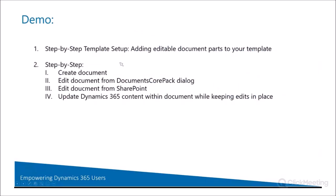What we're going to do today is show you the template setup — adding editable document parts to your template and how to go through that. And then we'll show you the process step by step: we're going to create a document using that template, edit the document from the Documents Core Pack dialog, then flip over to SharePoint and make some edits to the document there. Then we'll go back into Dynamics 365, recreate this document, and show you that it pulls the edits in automatically. And then we can make new edits to it and change the document.